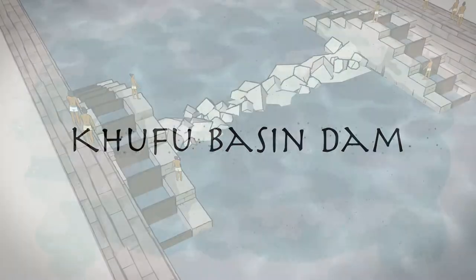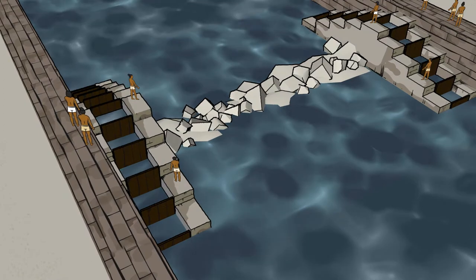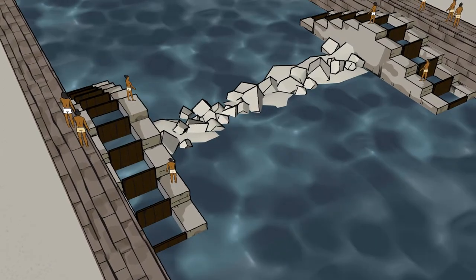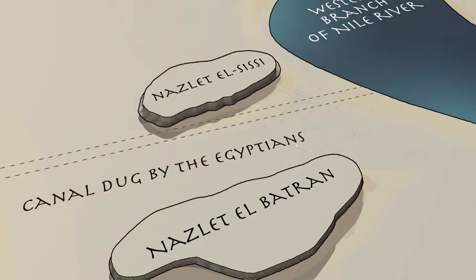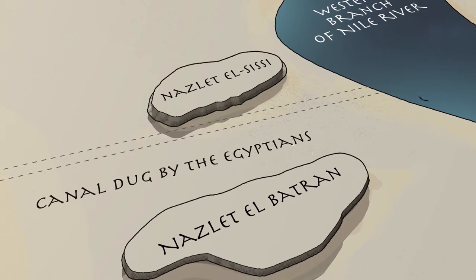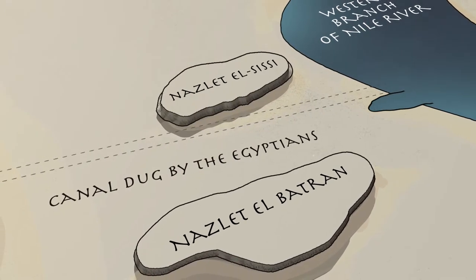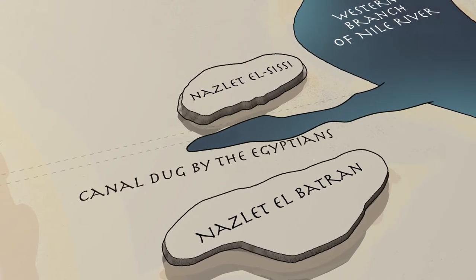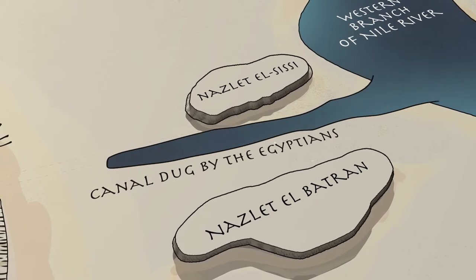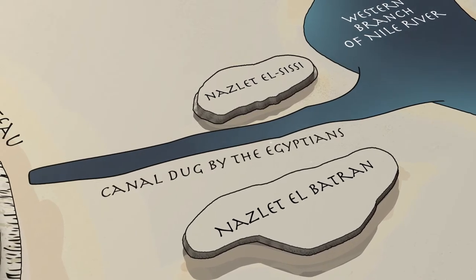Employing their knowledge of agricultural basins, the Egyptians would have constructed a dam in the Khufu basin to make it possible for water transport to continue all year. When the annual inundation began, the Egyptians allowed the Nile water to flow into the basin, traveling between two mounds, Nazalet-el-Sisi and Nazalet-el-Batran, bringing an influx of water to the Giza Plateau.